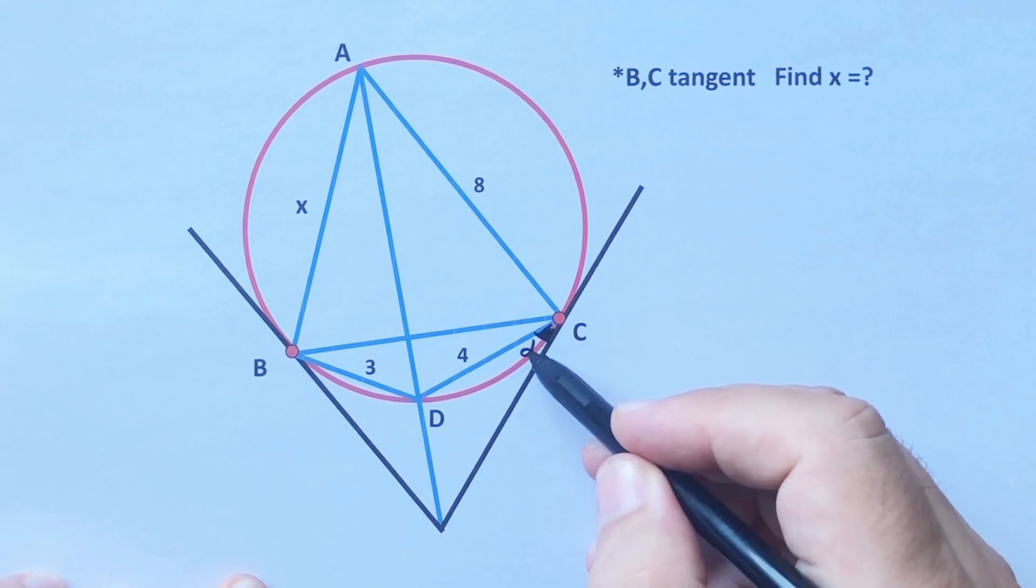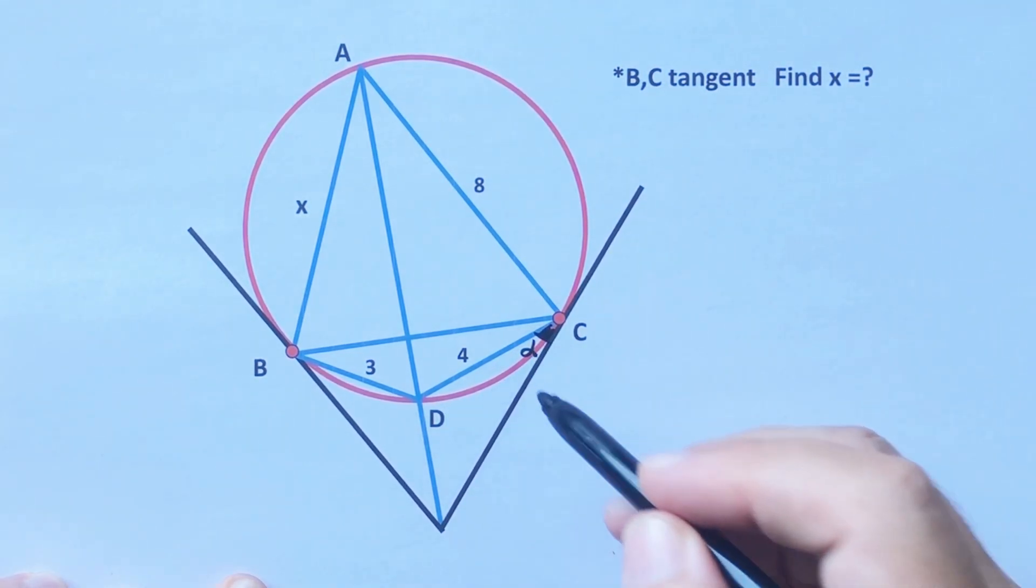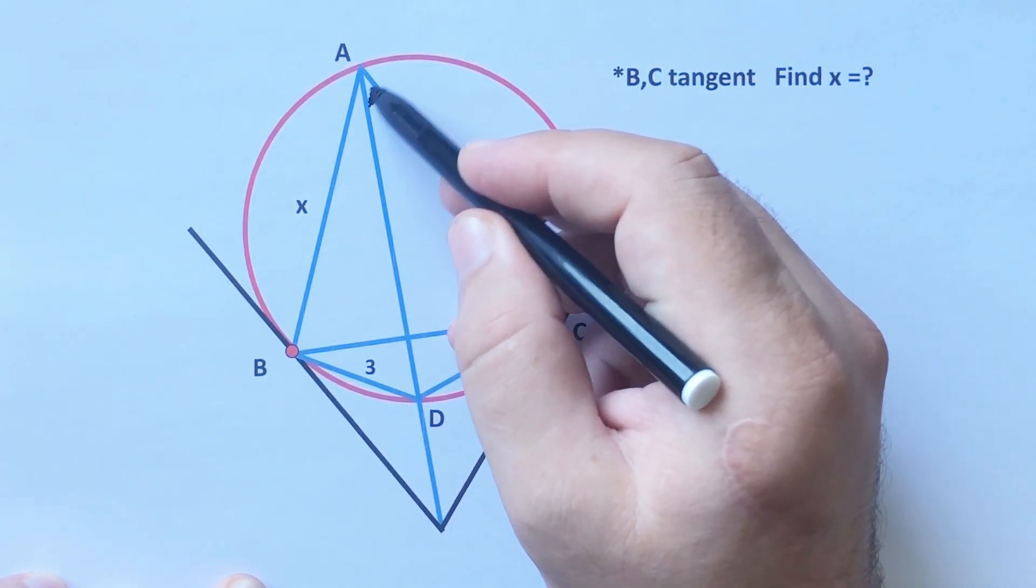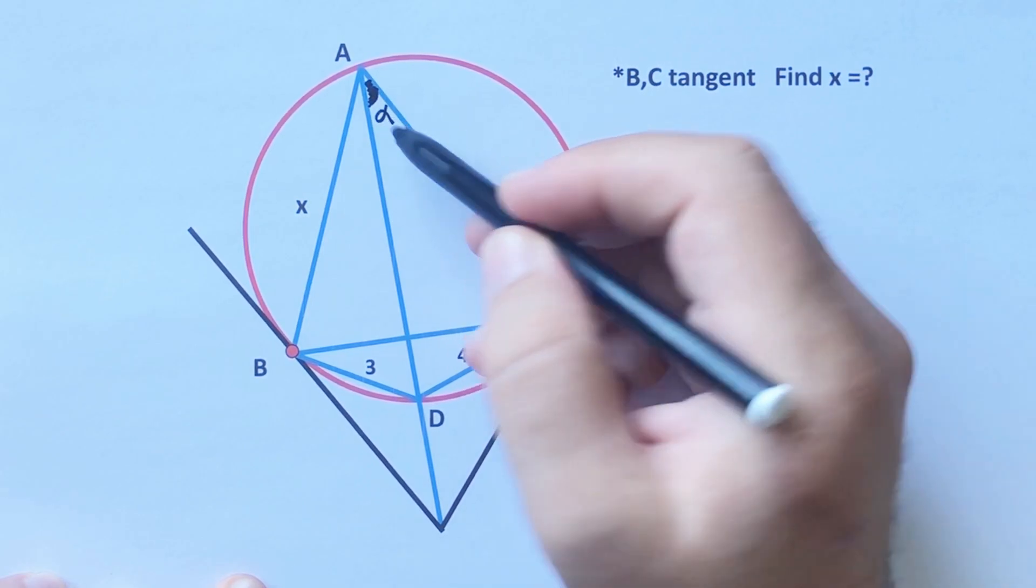Alpha. And notice that if here is alpha, this angle must be alpha, right?